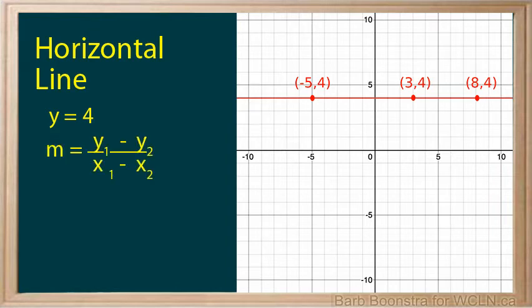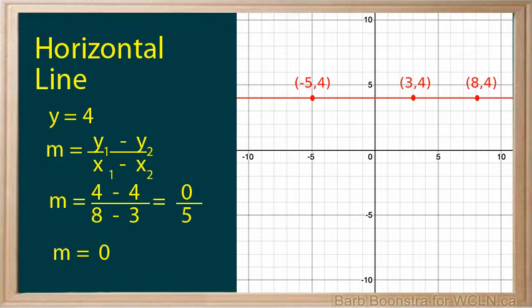Now let's find the slope of this line. We will use the points 8, 4 and 3, 4. This gives us a slope of 0 over 5. The slope of the horizontal line is 0.